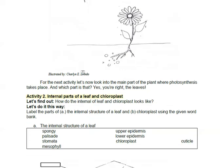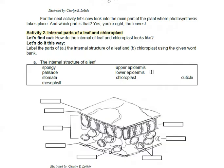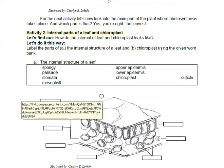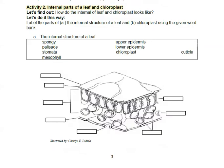Continue. Then you answer activity number two, the internal parts of a leaf and chloroplast. Because yes, this is where the magic happens, where photosynthesis takes place. It's in the leaves. So here you have the internal structure of a leaf. If you cut a leaf and look at it from the side, this is what you will see under a microscope. And this is the internal structure of a leaf.